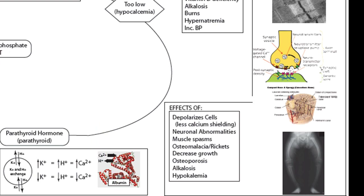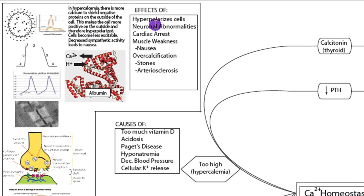Now let's look at the effects of hypercalcemia — it's fairly similar, although in the opposite direction to the effects of hypocalcemia. There's more calcium to shield those negative charges on the outside of the protein, and this causes hyperpolarization because the inside of the cell now seems more negative since the outside of the cell is more positive.